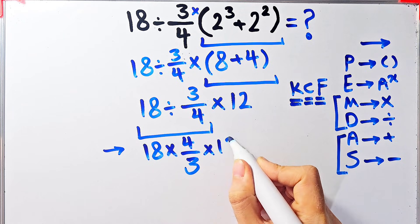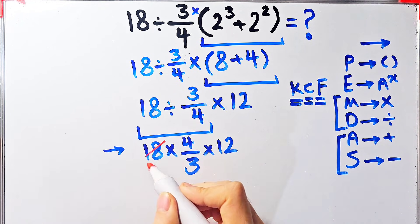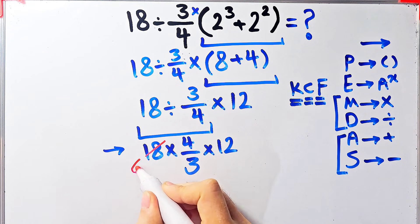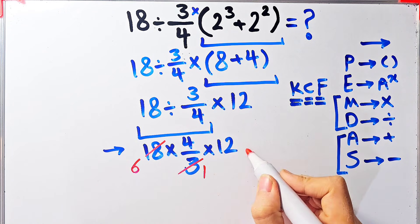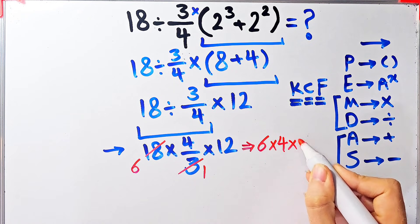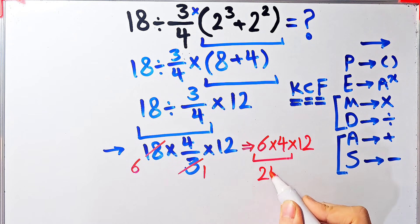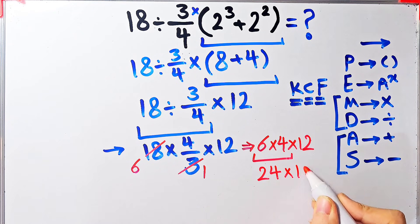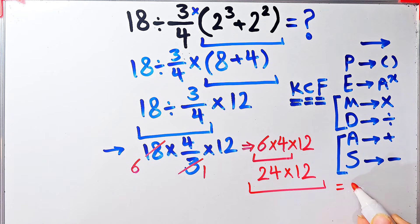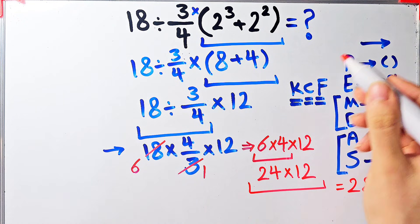After applying KCF, we get a new expression. 18 divided by 3 equals 6, and 3 divided by 3 equals 1, giving us 6 times 4, then times 12. Starting from the left: 6 times 4 equals 24. Now we have 24 times 12, which equals 288. The final answer of this question is 288.